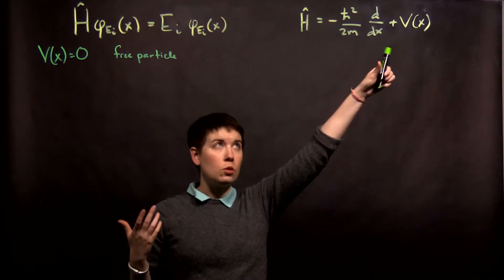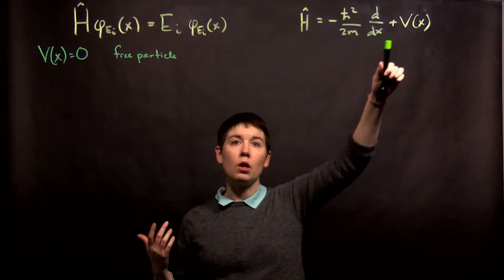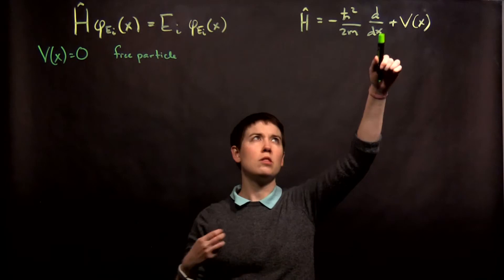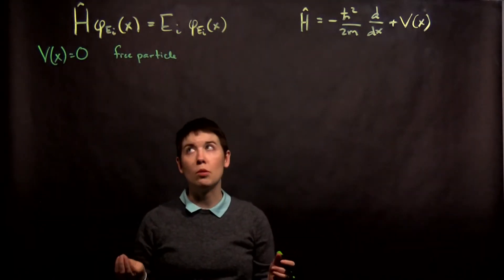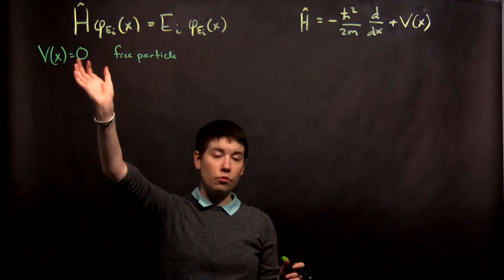So now in general our Hamiltonian is going to be this first term coming from the kinetic energy or momentum operator and then the potential. So in order to do anything here we have to make an assumption about potential. Let's choose the free particle.